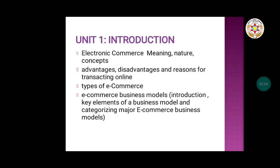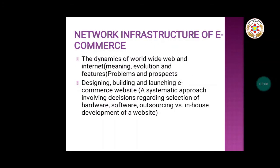The next subtopic of Unit 1 is network infrastructure of e-commerce, which discusses what the e-commerce platform requires. This involves the dynamics of the World Wide Web and the internet — its meaning, evolution, features, problems, and prospects. We will discuss the WWW and internet, including its advantages, disadvantages, how it evolved, and different problems associated with its use.